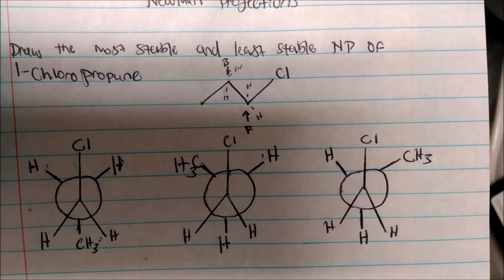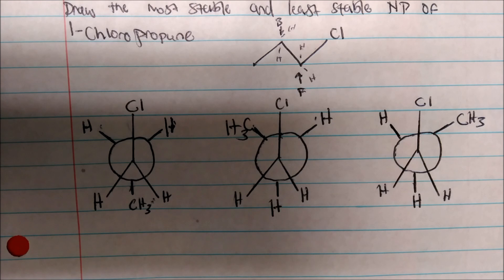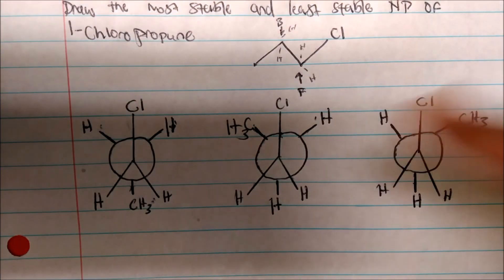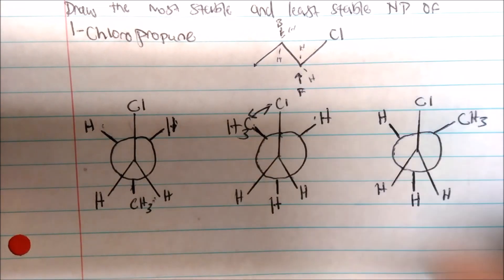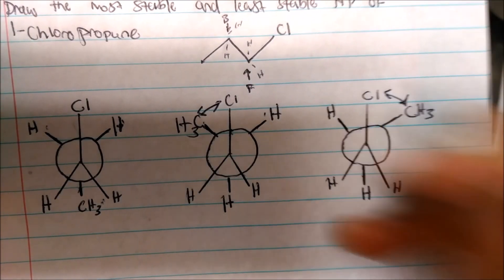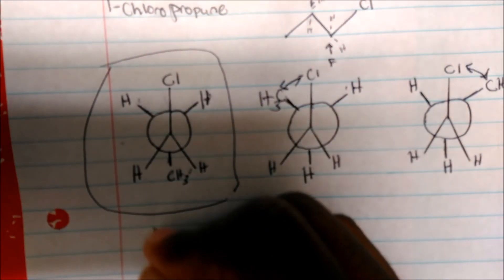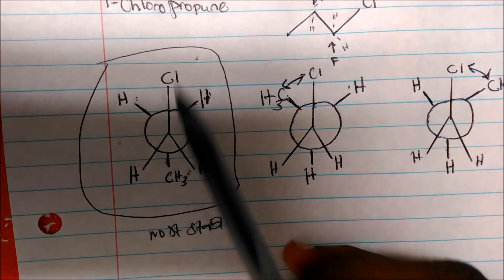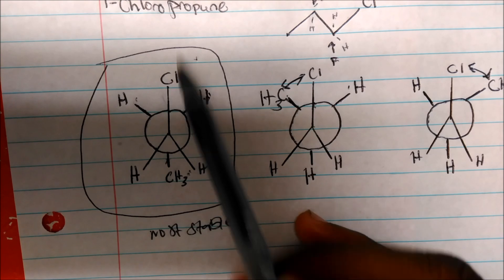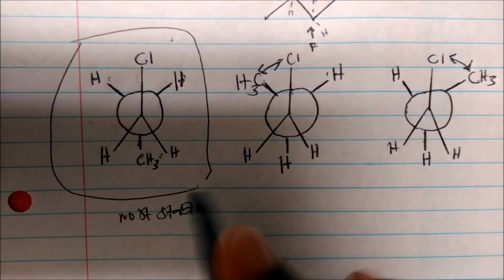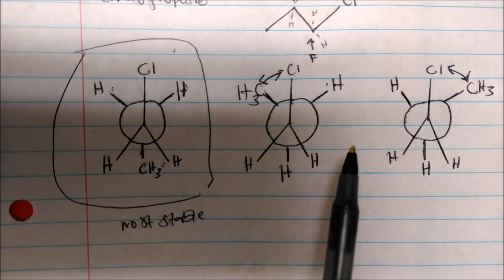So now I have these three staggered conformations. Which one is the most stable? We have what is called gauche conformation, steric strain, and torsional strain. The gauche conformation is when non-bonding atoms are too close together, causing high energy. So there's gauche strain here and also one over here — but this one will be the most stable because the two non-bonding groups, the methyl and the chlorine, are actually anti-parallel. The methyl group is all the way over here and the chlorine is all the way on the other side, so they are as far apart as possible with no strain. This is the most stable conformation for 1-chloropropane.